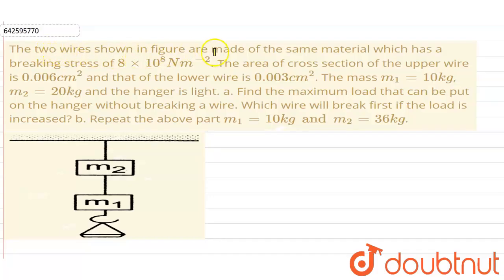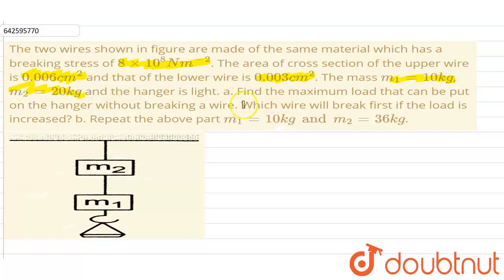Hello everyone. Our question is: the two wires shown in the figure are made of the same material, which has a breaking stress of 8 × 10⁸ N/m². The area of cross-section of the upper wire is 0.06 cm² and the lower wire is 0.003 cm². The mass m1 is 10 kg and the mass m2 is 20 kg. The hanger is light. Find (a) the maximum load that can be put on the hanger without breaking a wire, and which wire will break first if the load is increased. (b) Repeat the above part when m1 = 10 kg and m2 = 36 kg.